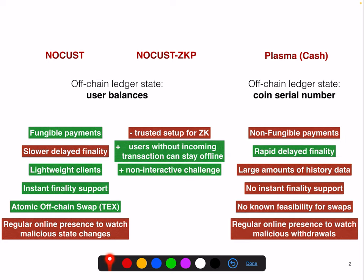This is a traditional assumption in payment channels at least. For NoCast ZKP, there's a trusted setup, but trusted setups can be performed in a decent, fast way nowadays — you can look at TornadoCash for example. The advantage of NoCast ZKP is that users without incoming transactions can actually stay offline because they have nothing to verify, and there's a non-interactive challenge which is quite beneficial.